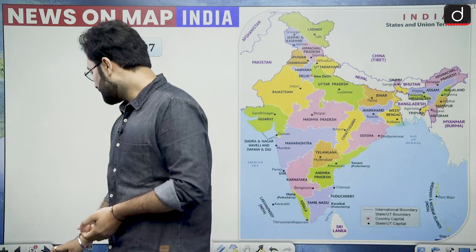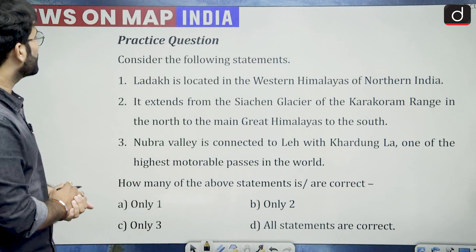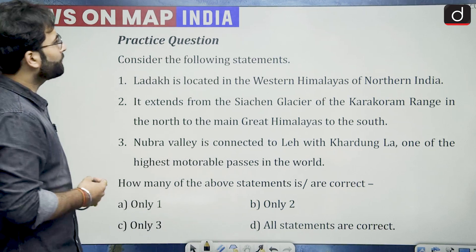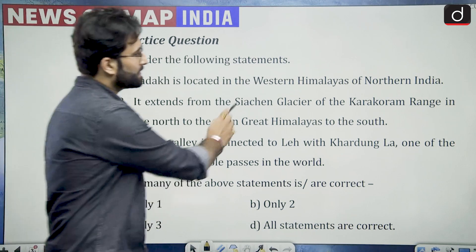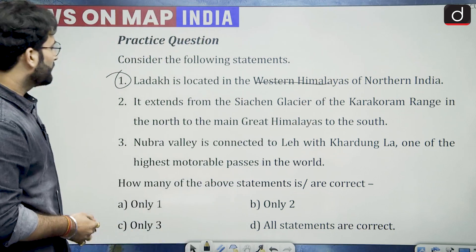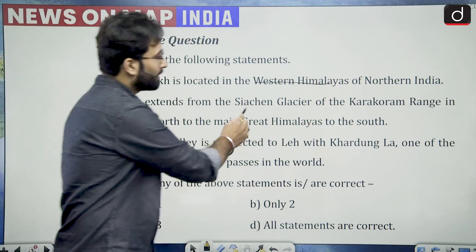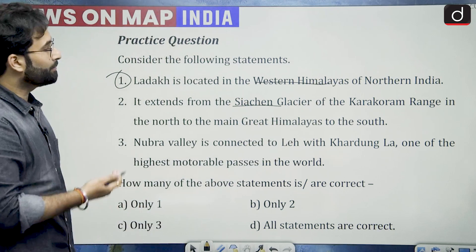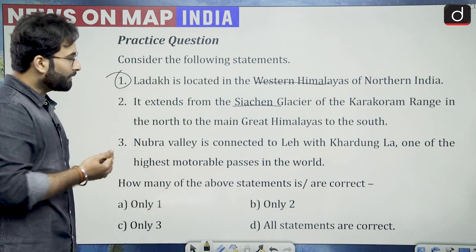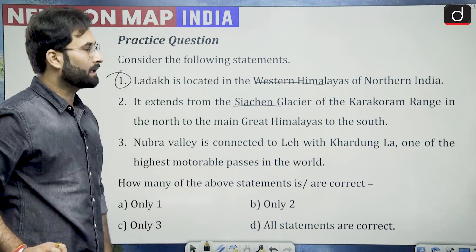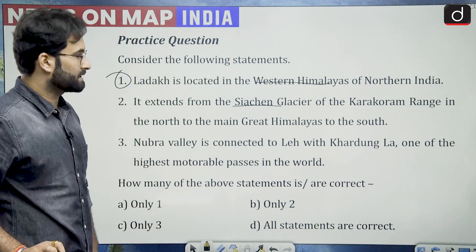We will start with the practice question which was given in the last class. Consider the following statements. Statement 1: Ladakh is located in the western Himalayas of northern India. It extends from Siachen glacier of Karakoram range in the north to the main Great Himalayas to the south. Nubra Valley is connected to Leh with Khardungla, one of the highest motorable passes in the world.